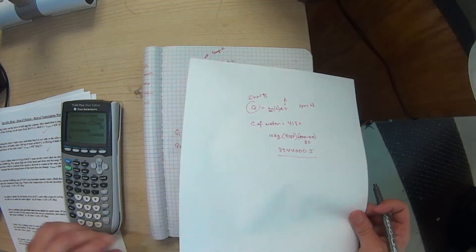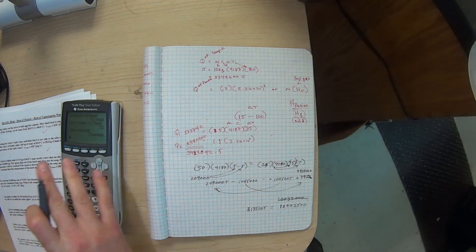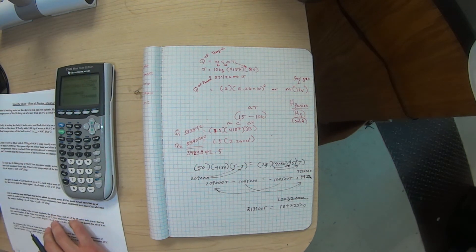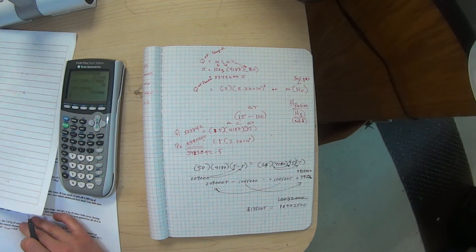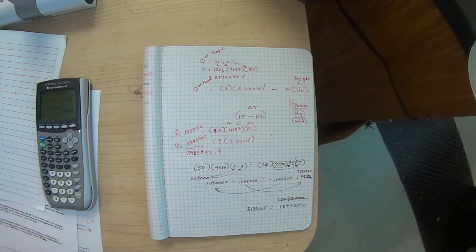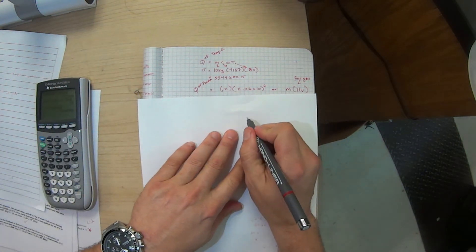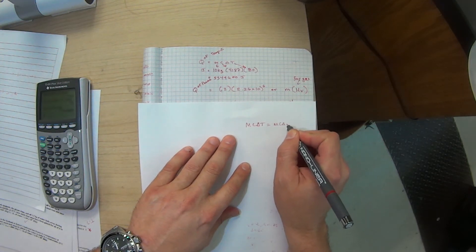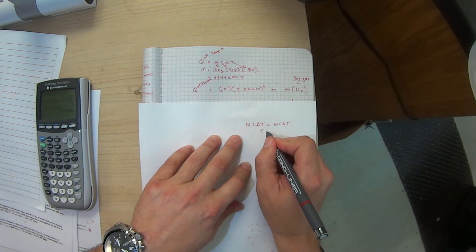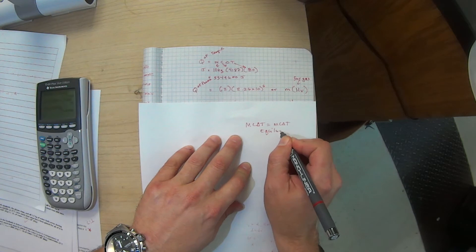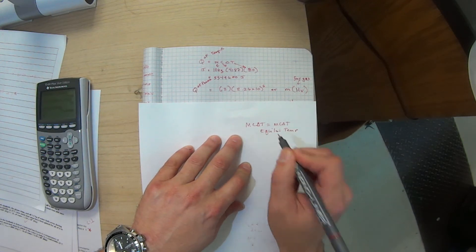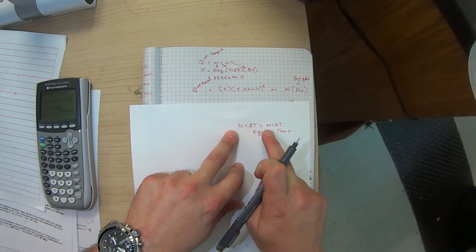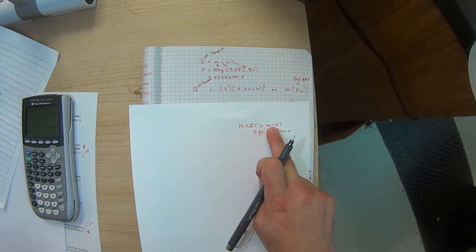That's a typical problem where you're going to be given how much it changed, what is it, and how much of it, and that'll give you the energy. Now let's go to the Emily problem. The Emily problem is you have two substances coming together, and with two substances coming together we do mcΔT equals mcΔT. The key words you're looking for here are equilibrium temperature.